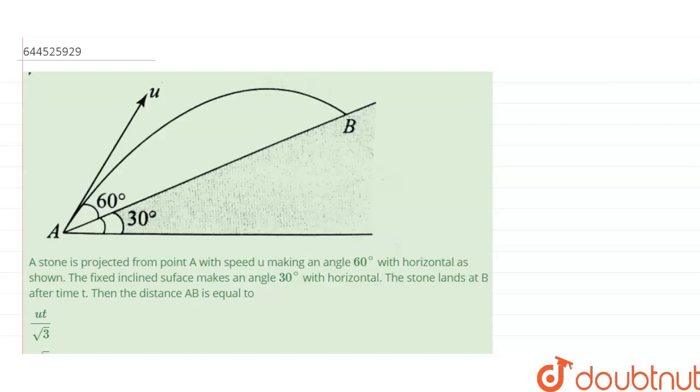Then the distance AB is equal to - we have to find out the distance AB. Now suppose if there is no inclined plane and only this is the velocity u, there are two components of this velocity: first component is vertical component and second component is horizontal component. So the horizontal component is u cos 60.